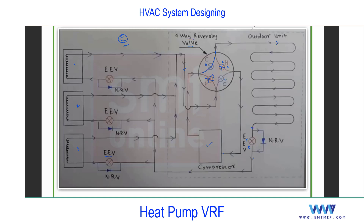Now for heating mode - I'm using red color to show this. In heating mode, two valves are in closed position and the other two are open - the opposite of cooling mode. The cycle still starts from the compressor. The compressed refrigerant at high temperature and pressure travels along the line, but now the valve that led to the condenser is closed, so it is redirected through the reversed path directly to the indoor units.